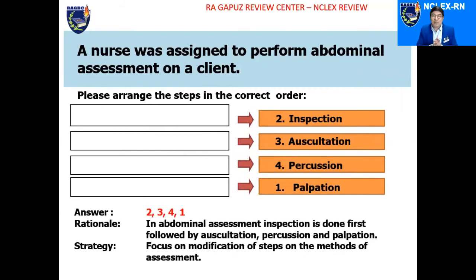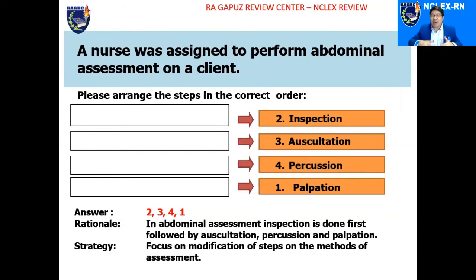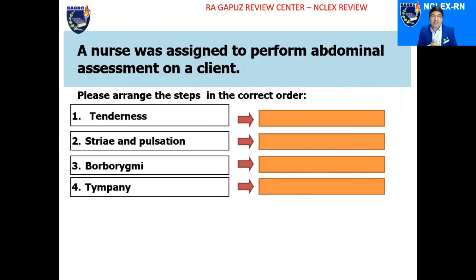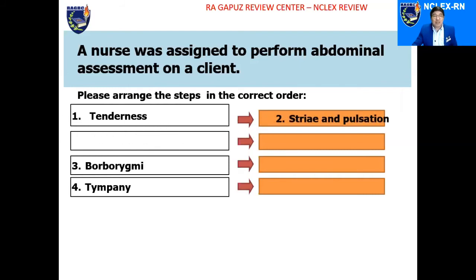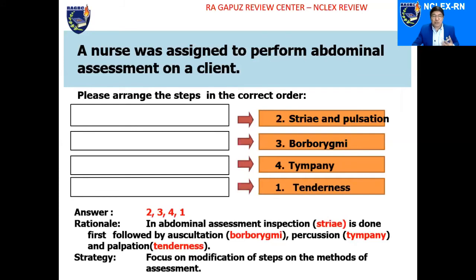You just need to be familiar with how to perform abdominal assessment. However, the NCLEX will not test you on something you already know — you have to dig deeper. Be prepared for a question like: 'A nurse was assigned to perform abdominal assessment on a client. Please arrange the steps in the correct order.' You inspect first — including striae and pulsation. Then auscultate for borborygmy. Then percuss for tympani. Then palpate for tenderness. You must integrate the methods of assessment, the sequence, and the manifestations specific to disorders.